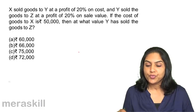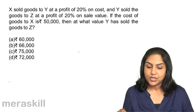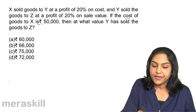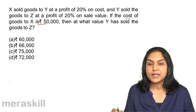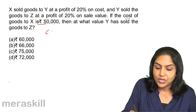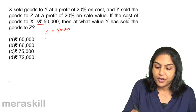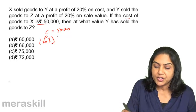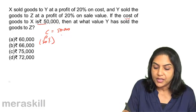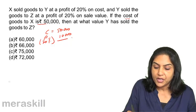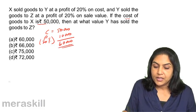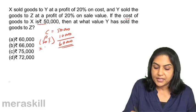X sold goods to Y — profit is 20% on cost. Cost to X is 50,000. Profit is 20% of 50,000, that is 10,000. So the sales value from X to Y is 60,000.